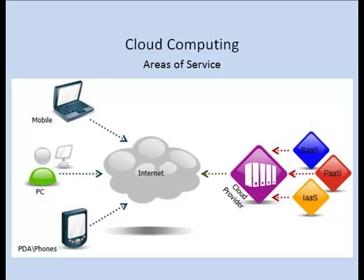Cloud computing includes three main areas of service: infrastructure as a service, platform as a service, and software as a service. Infrastructure as a service is the delivery of a networked computing infrastructure over the Internet. This infrastructure includes high-end servers with increased storage and processing power, internet connectivity, a secure environment for housing equipment, and online tools to remotely manage and monitor performance.